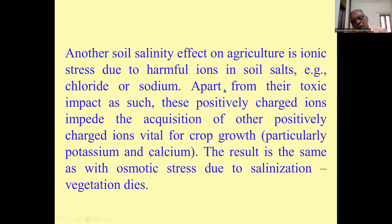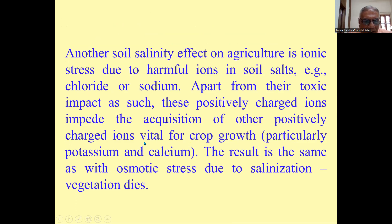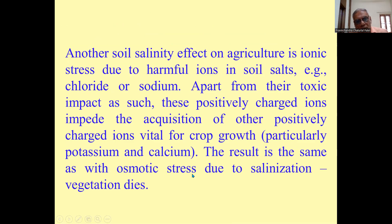Another effect of soil salinity on agriculture is ionic stress due to harmful ions in soil salts — that is, chloride or sodium chloride. Apart from their toxic impact, these positively charged ions impair the absorption of other positively charged ions vital for crop growth, particularly potassium and calcium. The result is the same as osmotic stress — vegetation dies.